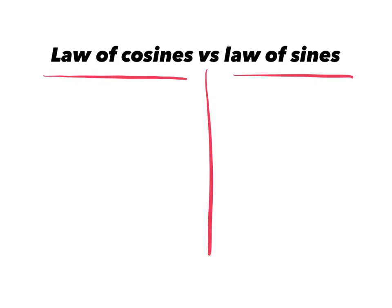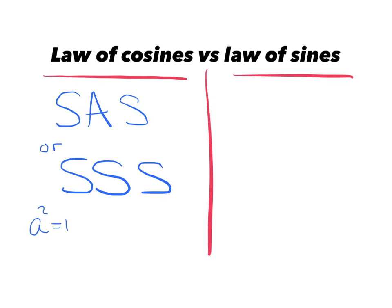When do you use which one? Hopefully you recall if you have side angle side or side side side, that's where we're going to stick with the law of cosines. So get those in your head: side angle side or side side side, we're going to law of cosines. And that rule is a squared equals b squared plus c squared minus 2bc cosine angle a. The thing you have to keep in mind here is what you're finding came first. These letters can be interchanged, but what you're finding comes first.